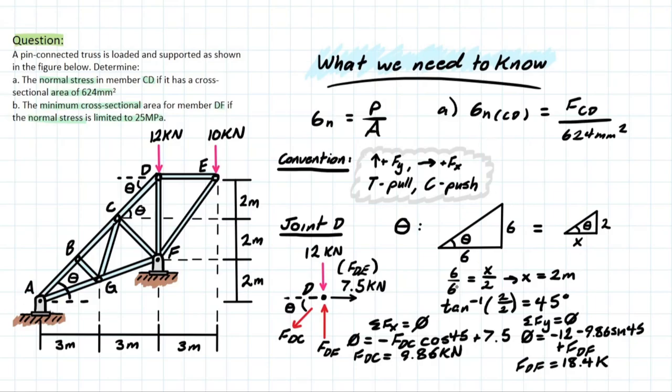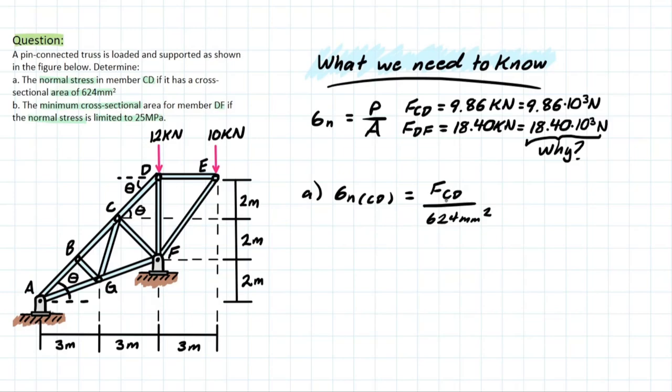So let's proceed to part A and solve. Now we can finally get solving. We have all the variables we need to solve part A finally. We know the normal stress is going to equal to FCD over the area given. So that is simply going to be 9.86 times 10 to the 3 newtons over 624 millimetres squared. Why did I do times 10 to the 3 though? I converted it because we know that MPa, which is megapascals, will be newtons over millimetres squared. So it's just a simple conversion in order to avoid any confusion during solving. We like to keep all of our stresses in a consistent unit, and MPa tends to be that unit. So solving this, we're left with the normal force created in CD based on the area is equal to 15.8 MPa.